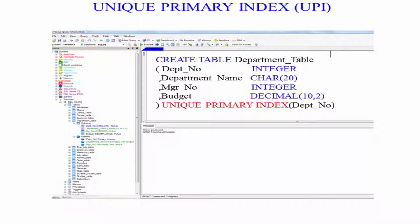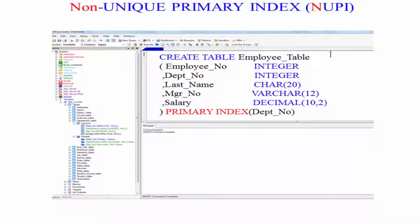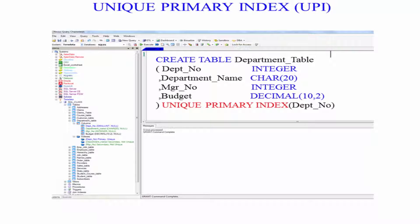You see, every table has one primary index, and there is another decision. Is it a unique primary index or is it a non-unique primary index? OOPI, NOOPI.